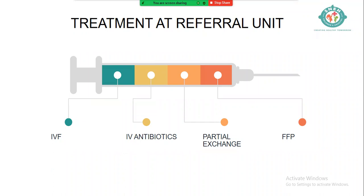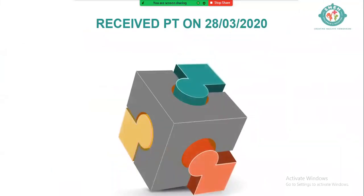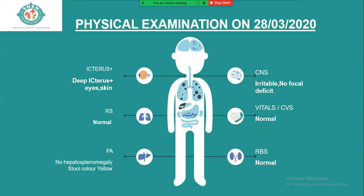This child was managed at the referral unit with IV fluids, IV antibiotics, partial exchange, and FFP. We received the patient on 28th March — day 4 to day 8 of illness, with vomiting, excessive sleepiness, jaundice, and coagulopathy. On examination: deep jaundice present, respiratory rate normal, no hepatosplenomegaly, stool color yellow, sugar normal, vitals normal, child irritable but no focal neurological deficit.